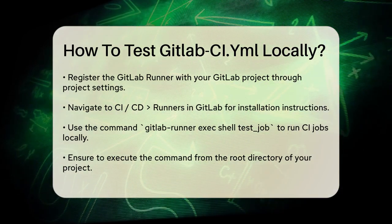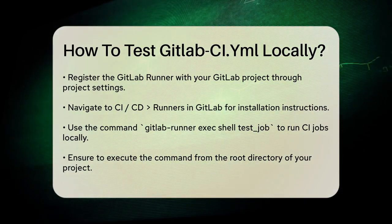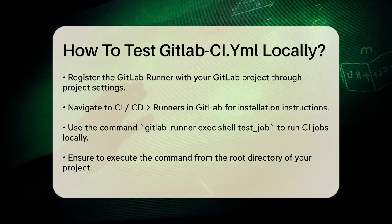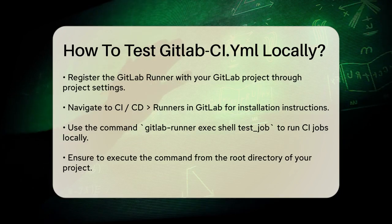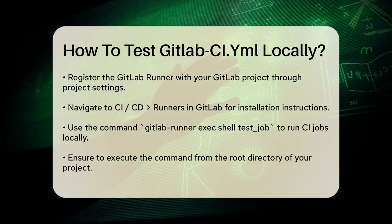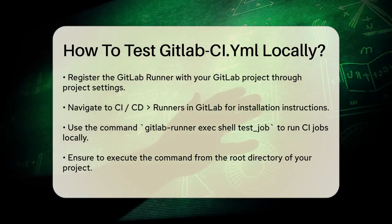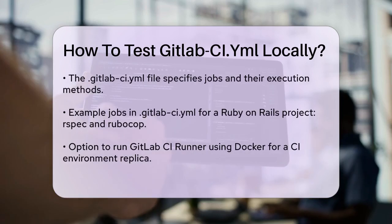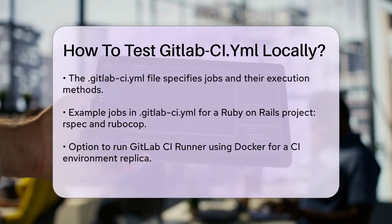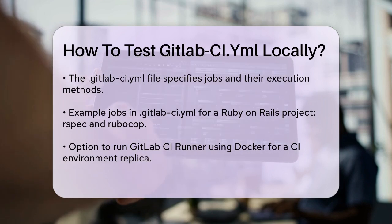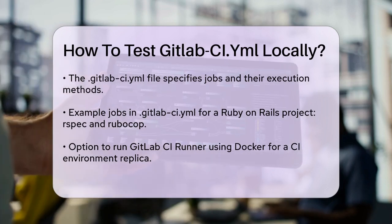Make sure you run this command from the root directory of your project, as it will look for the .gitlab-ci.yml file there. The .gitlab-ci.yml file itself is crucial — it specifies what jobs to run and how to run them. For instance, you might have jobs for running tests, building your application, or deploying it.